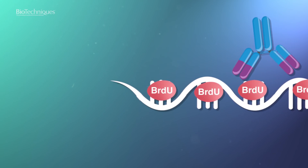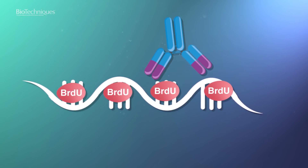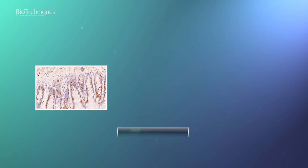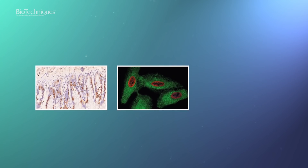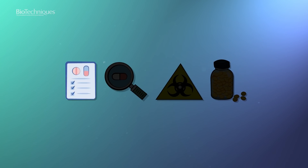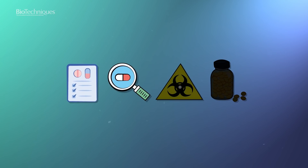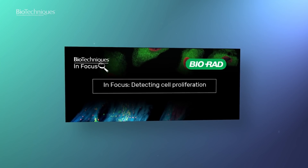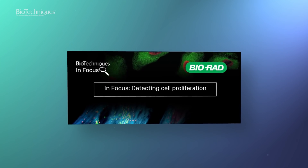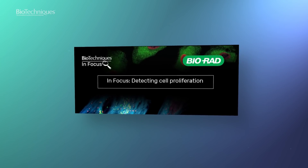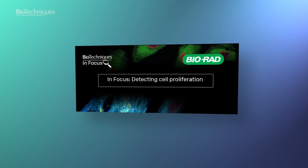BrdU incorporation into cells and tissue can be visualized using various immunoassays including immunohistochemistry, immunocytochemistry, and flow cytometry. This technique is highly translational and can be used for a number of applications including drug screening and the analysis of anti-cancer medications, toxic substances, and other pharmaceuticals. In this InFocus we will explore the techniques available for detecting cell proliferation and the potential applications of these techniques, with a special focus on measuring DNA synthesis with BrdU.